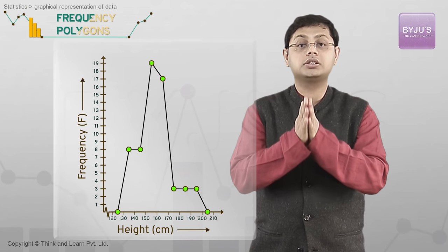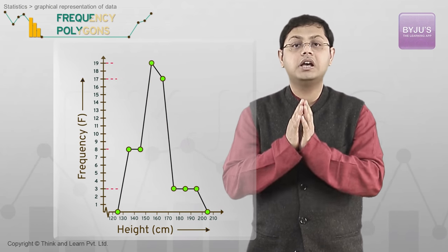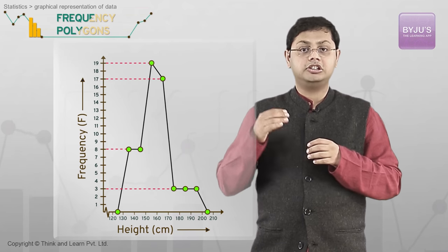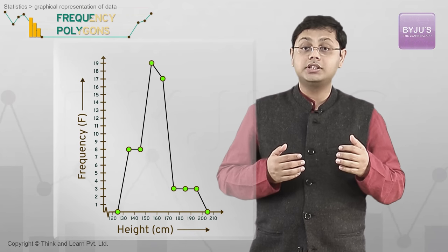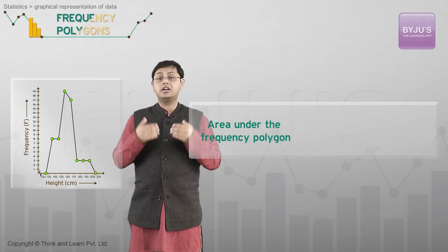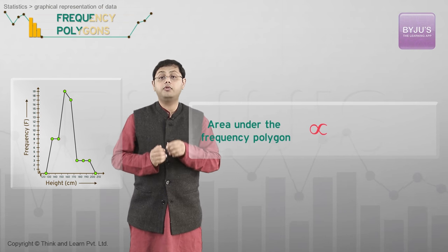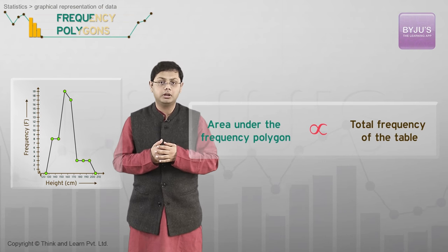Instead of drawing the entire bar of a histogram, you just mark the frequency levels with the y-axis at the class mark. Just like a histogram, frequency polygon's total area is directly proportional to the total frequency of the table.